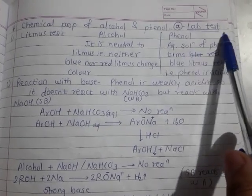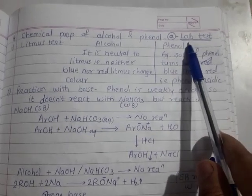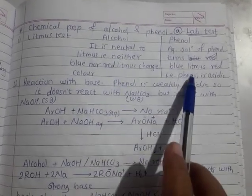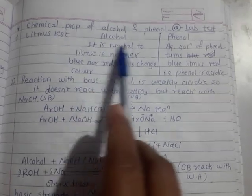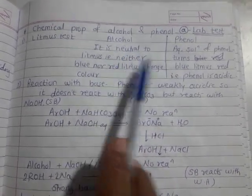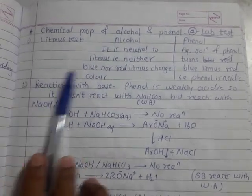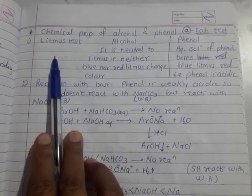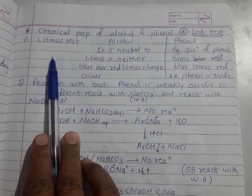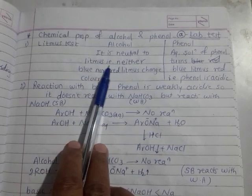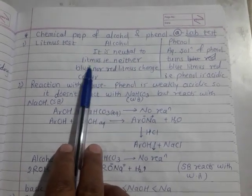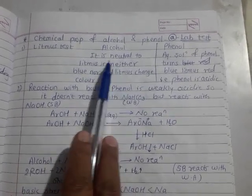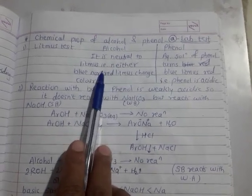Point A is the laboratory test — tests done in the lab to identify whether a given substance is alcohol or phenol. This is also part of your practicals. The first test is the litmus test. Alcohol is neutral to litmus paper — neither blue nor red litmus changes color in alcohol. However, the aqueous solution of phenol turns blue litmus red, indicating that phenol is acidic in nature.